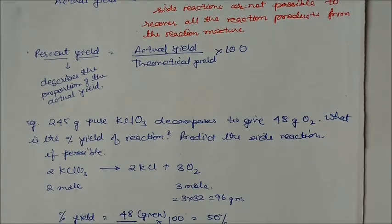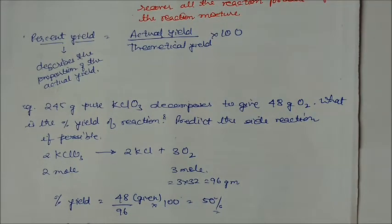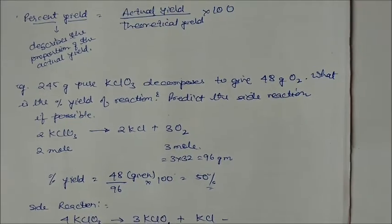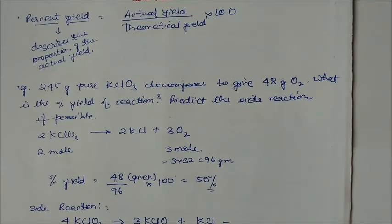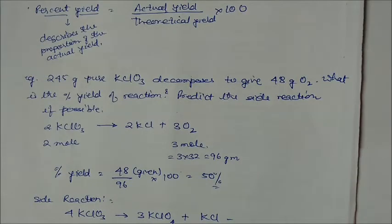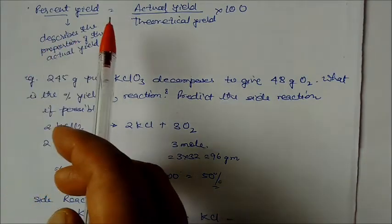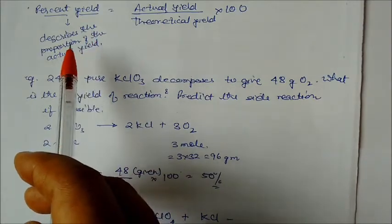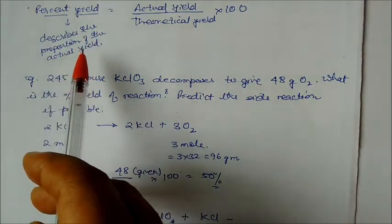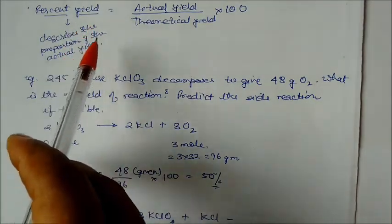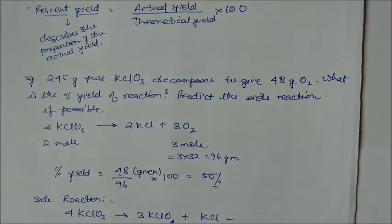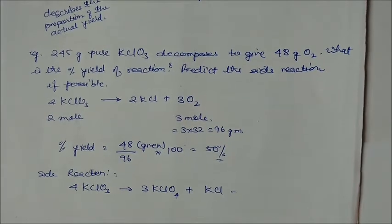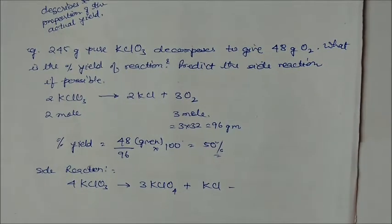The formula for percentage yield is: percentage yield = (actual yield / theoretical yield) × 100. This describes the actual proportion of product obtained compared to the theoretical maximum.